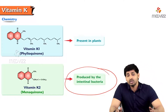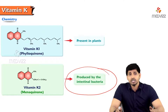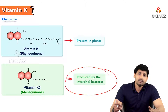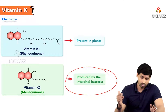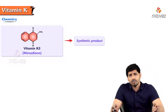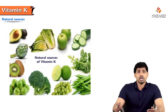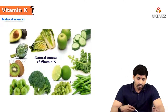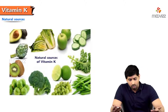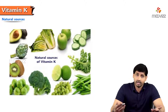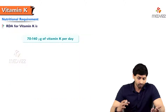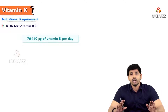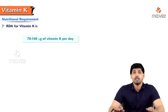This is the first fat-soluble vitamin we have studied that is also present in intestinal bacteria - the intestinal bacteria in our gut are able to produce vitamin K2, which is menaquinone. Menadione is a synthetic product used for treatment of patients with hemorrhagic disorders. For sources, all leafy vegetables and green colored fruits and vegetables are rich sources of vitamin K - broccoli, kiwi, avocado, beans, grapes, oranges, apples, cucumber. The recommended daily allowance for vitamin K is 70 to 140 micrograms.